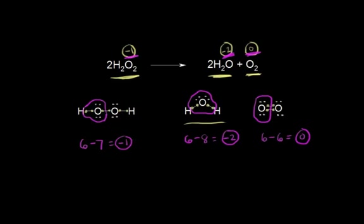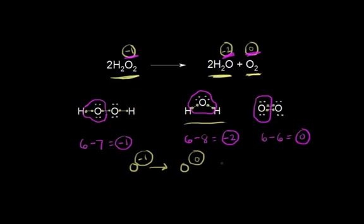Now we have our oxidation states and we can analyze this a little bit better. We have a case where oxygen on the left has an oxidation state of negative 1. Let's say this oxygen atom turned into one of the O2 oxygen atoms — it's going from an oxidation state of negative 1 to an oxidation state of 0. That is an increase in the oxidation state. Therefore, by definition, we know that oxygen is being oxidized here.